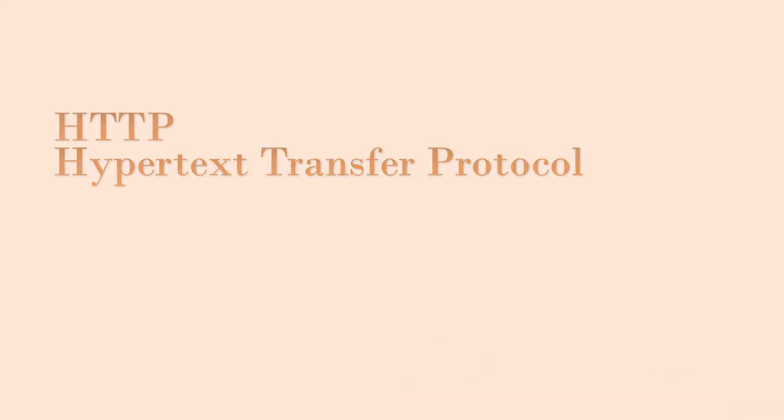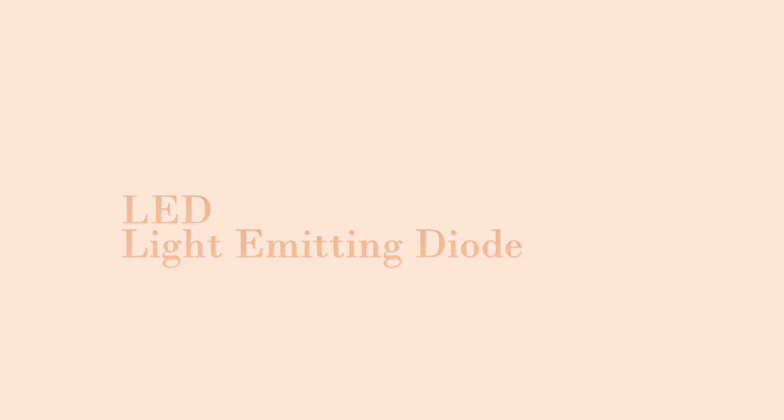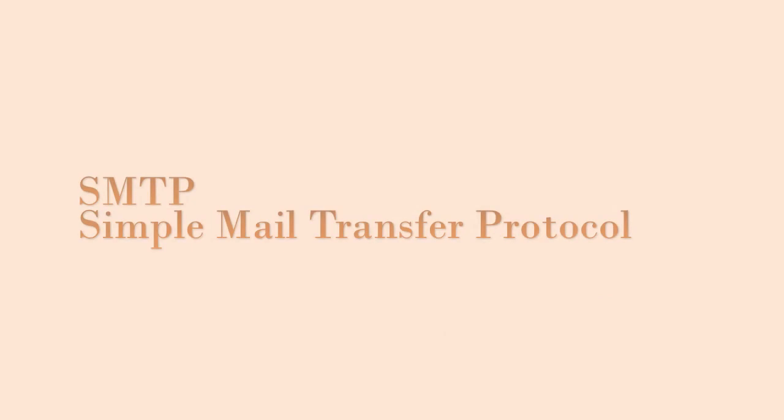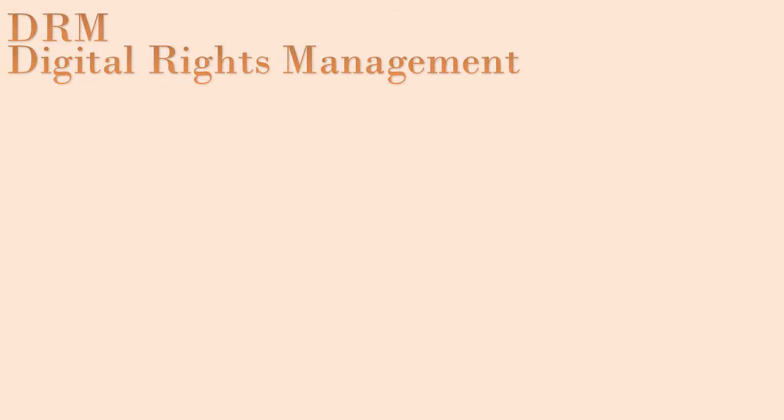HTTP: Hypertext Transfer Protocol. IDS: Intrusion Detection System. LED: Light Emitting Diode. IR: Infrared. NTFS: New Technology File System. PIN: Personal Identification Number. RFID: Radio Frequency Identification. SMTP: Simple Mail Transfer Protocol. FAT: File Allocation Table. IO: Input Output. KB: Knowledge Base. LCD: Liquid Crystal Display. MAN: Metropolitan Area Network. DRM: Digital Rights Management. IPSEC: Internet Protocol Security. NIC: Network Interface Card.